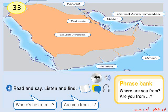Unit 5, Lesson 1, Activity 4. Read and say, listen and find. Where's he from? He's from Jeddah. He's from Saudi Arabia. Are you from Saudi Arabia? Yes, I am. I'm from Riyadh.